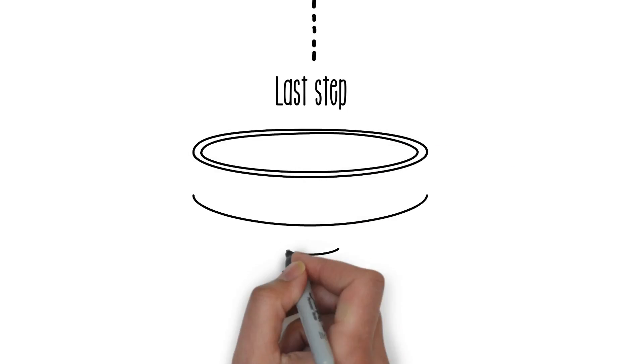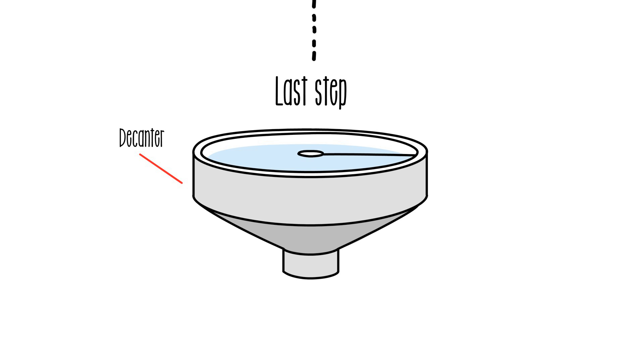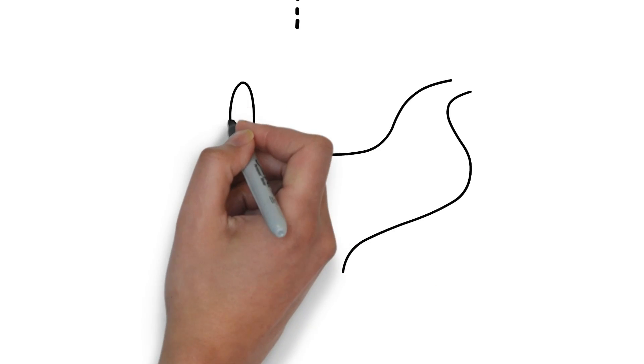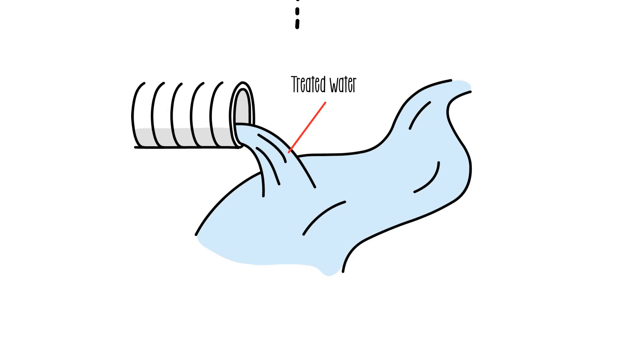The last phase takes place in a funnel-shaped decanter, where the water remains long enough to be separated from the biomass, which will be recycled and continue the process. Finally, the water returns to the environment with over 95% of impurities removed.